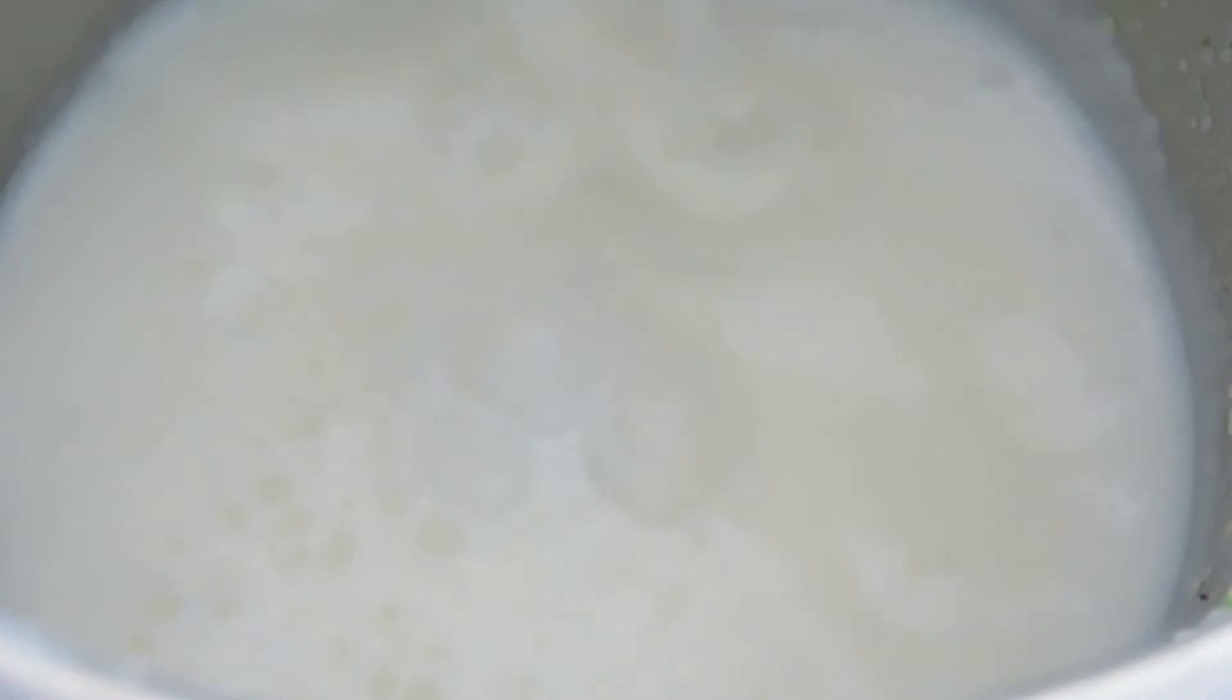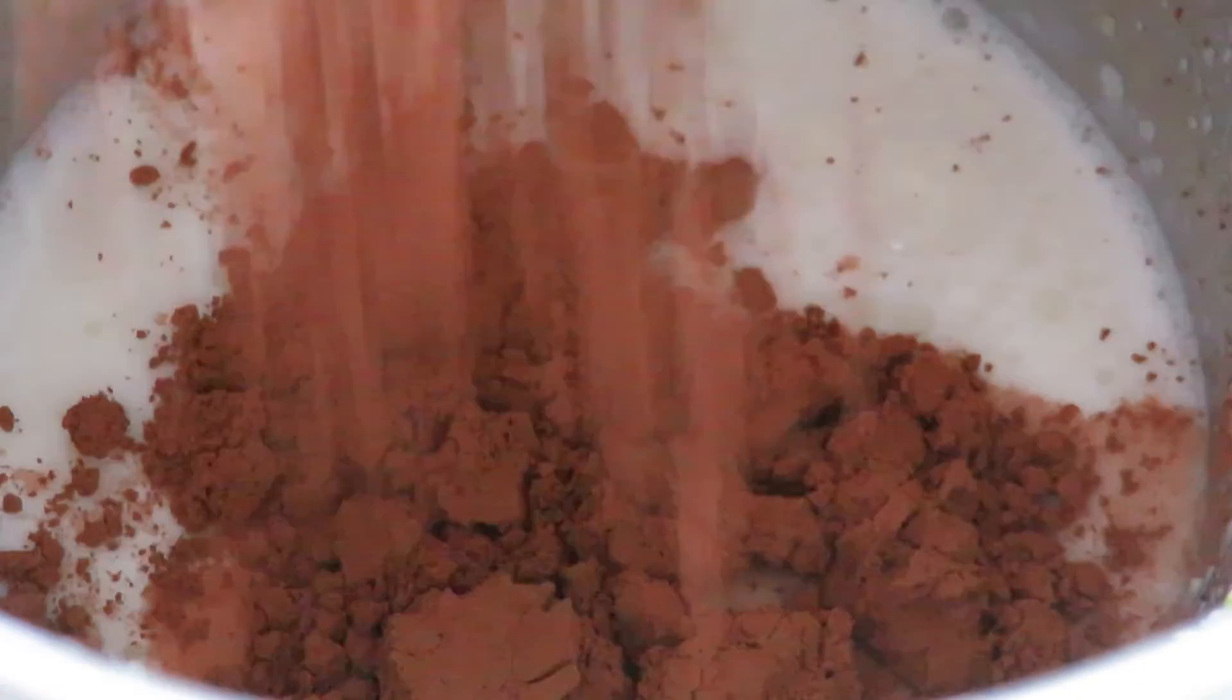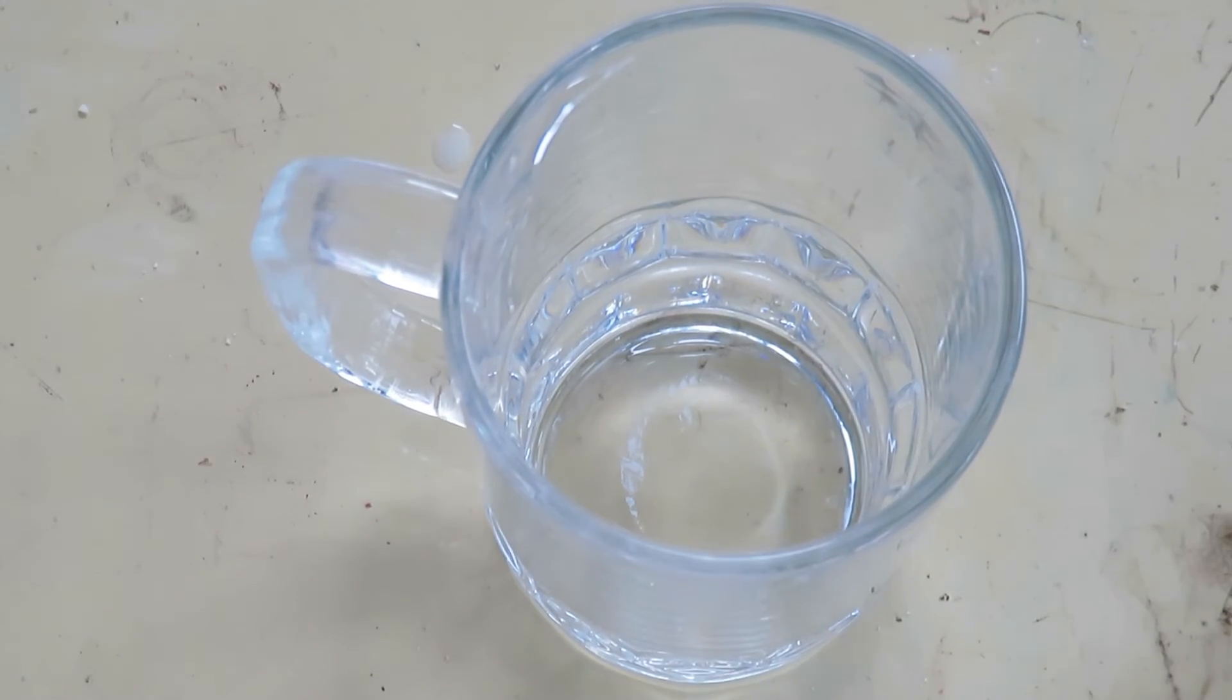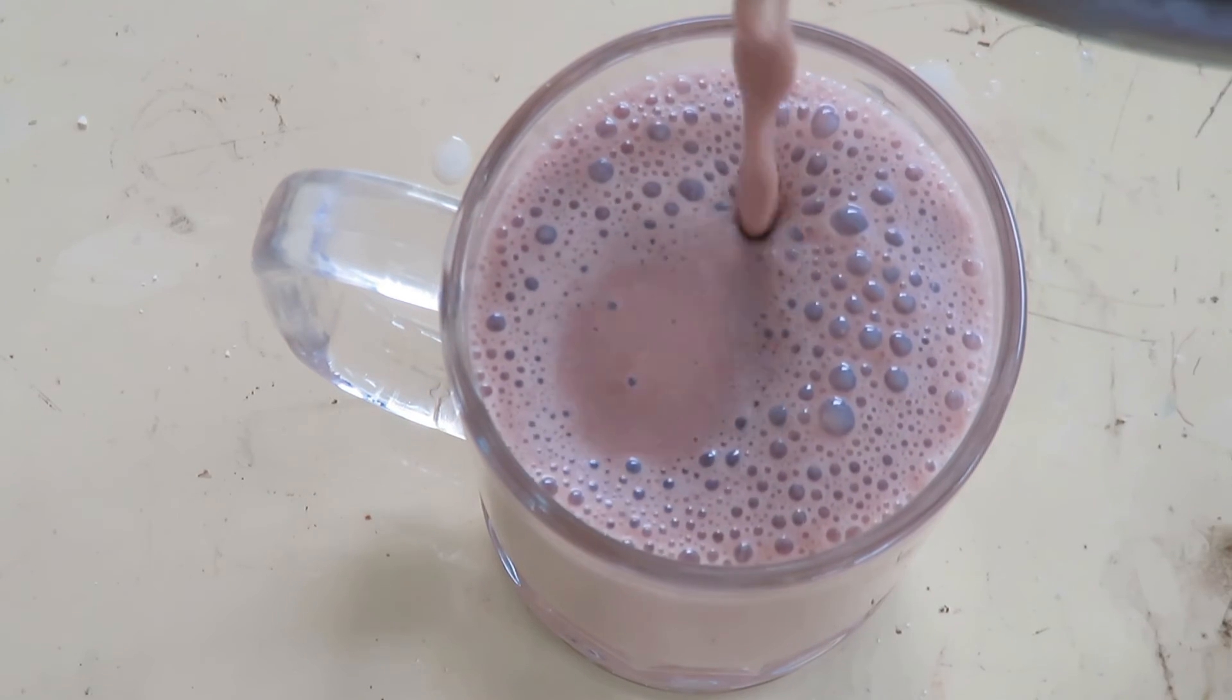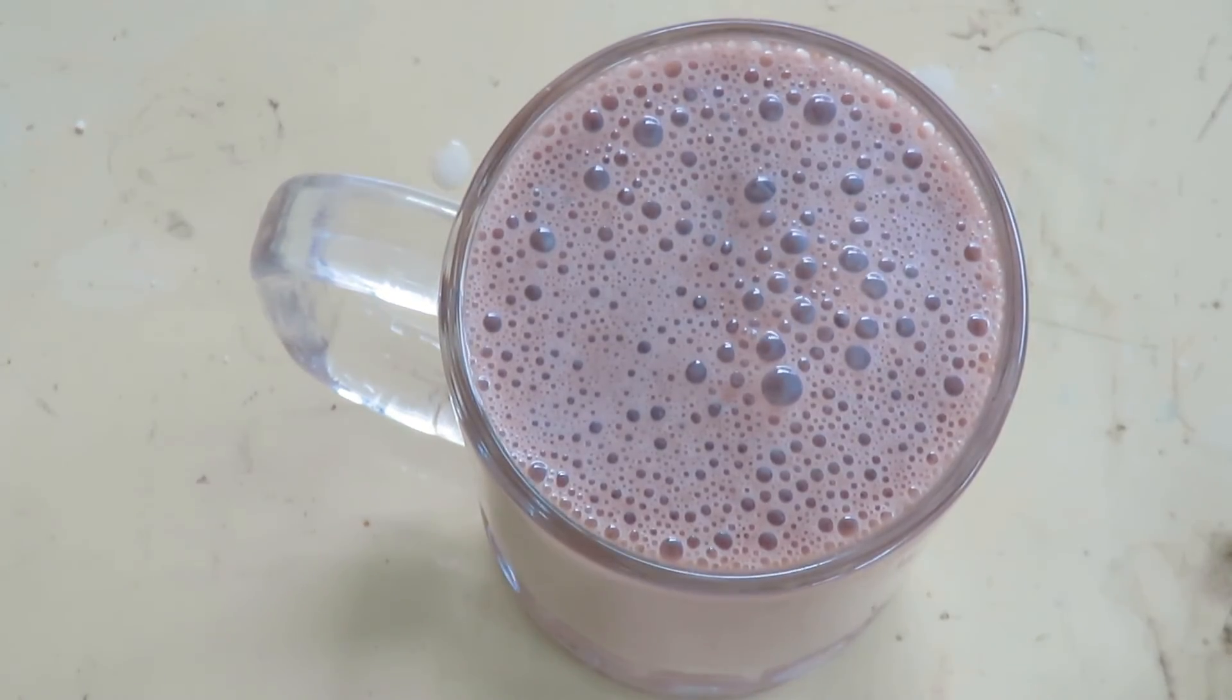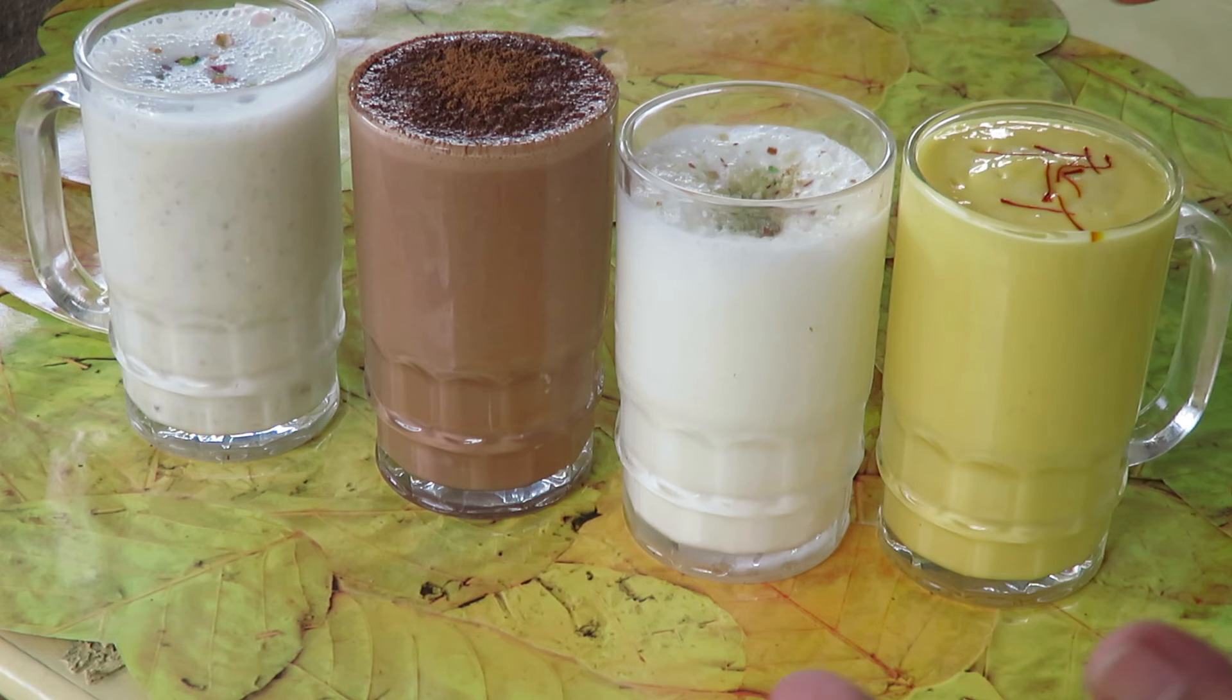In goes the base. We have one tablespoon of chocolate powder here - try to use a premium chocolate powder please, I use Hershey's. We give it a grind. Guys, the lassi possibilities are endless. I'm telling you, you have the base in the fridge and you can make so many varieties out of it. We have our chocolate lassi here too. We garnish this with some chocolate powder.